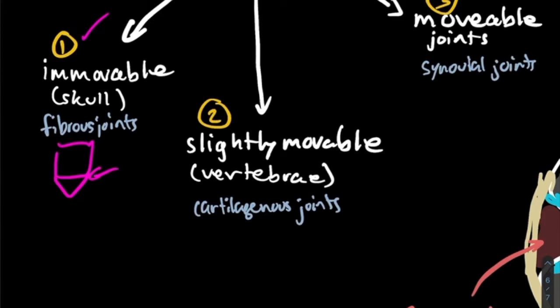Next, slightly movable joints, also called cartilaginous joints. A good example is your vertebrae — these only move a little bit individually. However, because you have so many of them, the composite movement can actually be quite significant. In between each vertebra, for example, there is a cartilaginous disc that sits in between them, which is how these joints get their name.